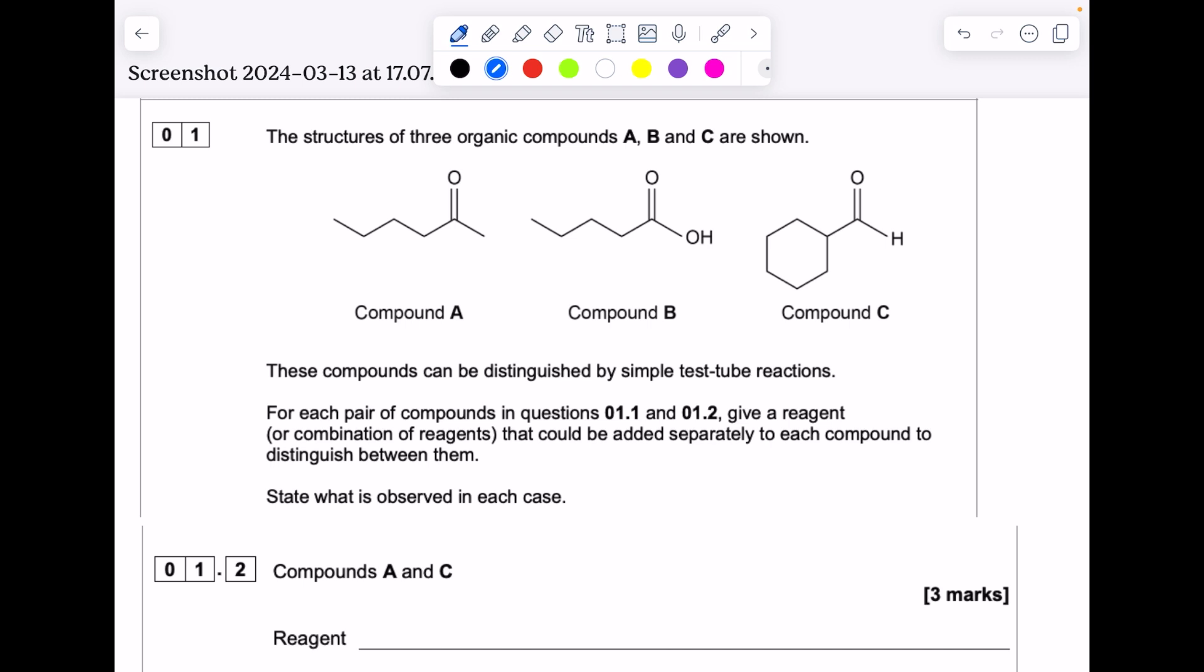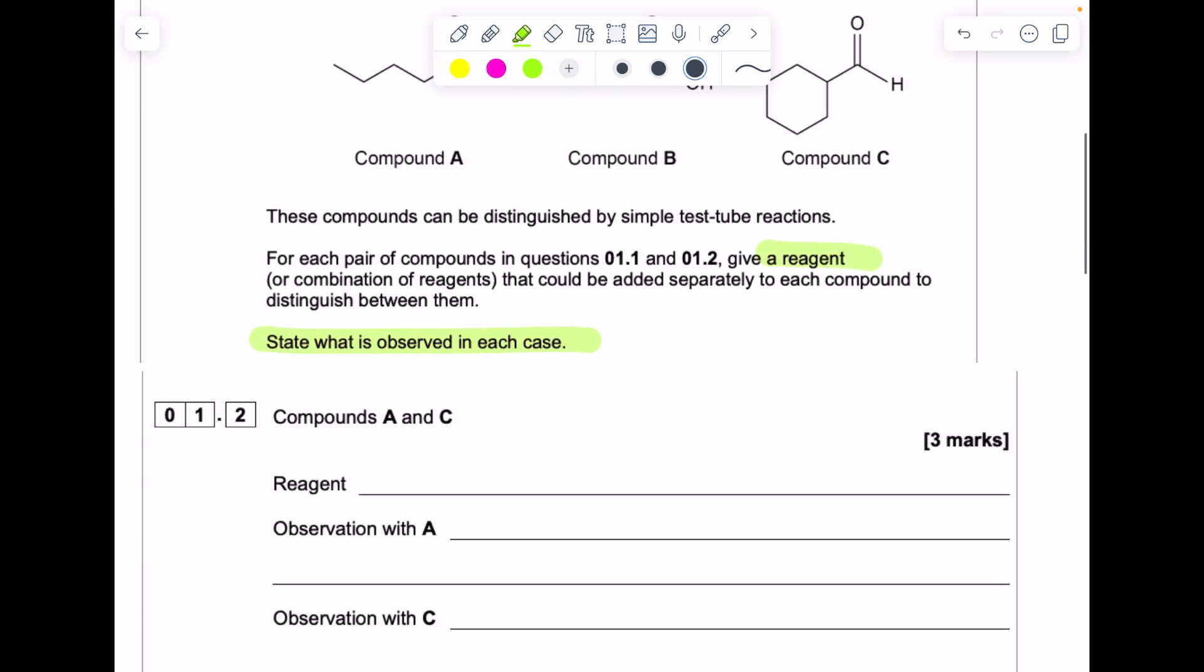The structures of three organic compounds A, B, and C are shown. These compounds can be distinguished by simple test tube reactions. For each pair of compounds in question 1.1 and 1.2, give a reagent or combination of reagents that could be added separately to each compound to distinguish between them and state what is observed.